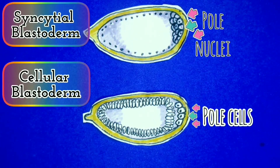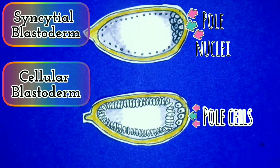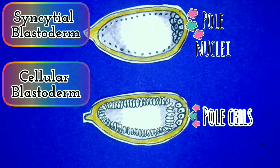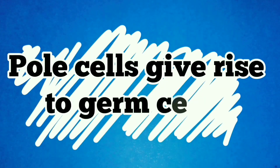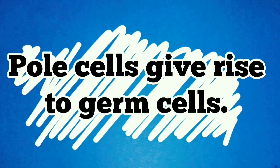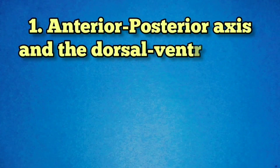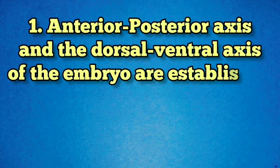The cell membrane grows inward and around each nucleus, creating a layer of approximately 6,000 cells at the outer surface of the embryo — the resulting structure is the cellular blastoderm. Nuclei at one end of the embryo develop into pole cells, which eventually give rise to the primordial germ cells. The early embryo then undergoes further development in three distinct stages.